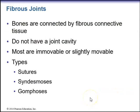Fibrous joints are bones connected by fibrous connective tissue, do not have a joint cavity, and most are immovable or slightly movable. There are three types of fibrous joints: sutures, syndesmoses, and gomphoses.